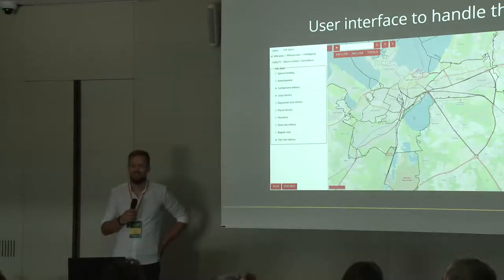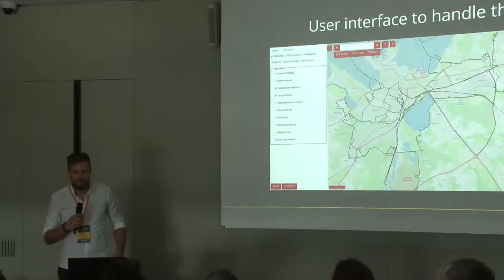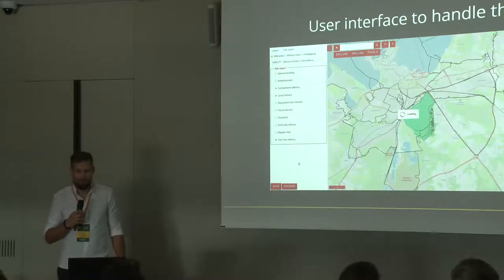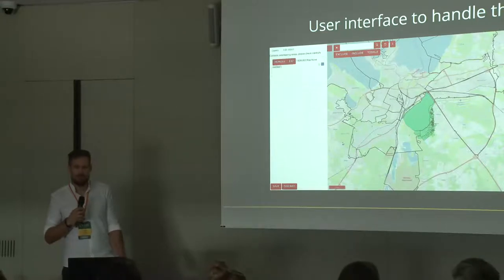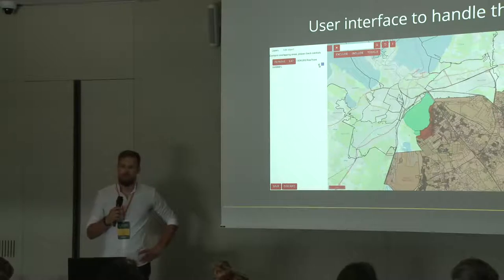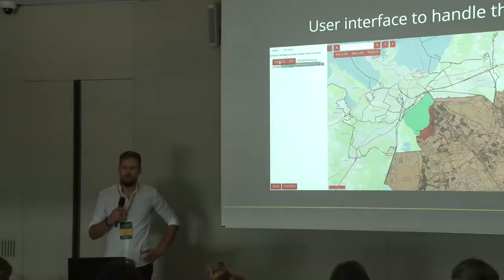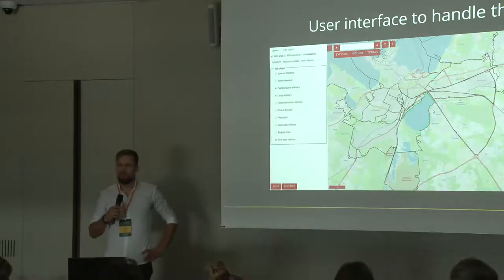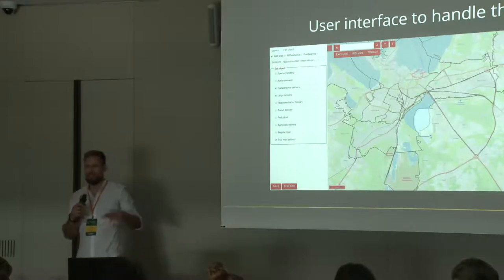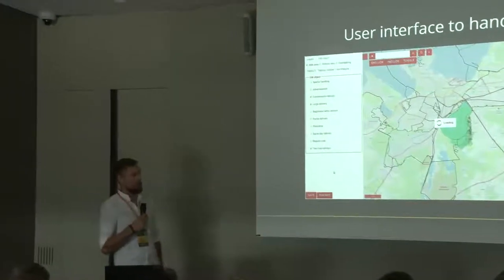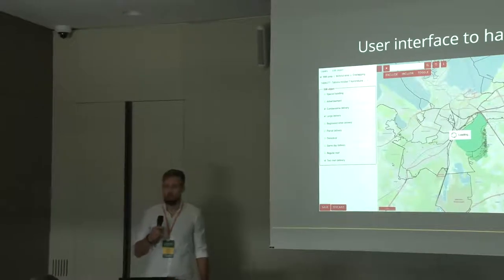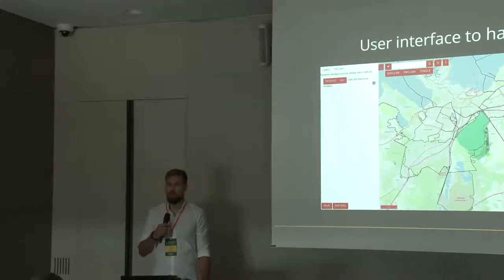Question: Did you also make tools for the customers to find misselections — like if a client makes the area and there's one parcel or one block that's in the wrong zone, did you make any tools for finding that one small block that should not be there? Answer: It's quite hard to detect what should not be selected. We can show where the leftovers are — which block is not selected — and also where the overlaps are, but defining which block is not correctly selected is quite hard.